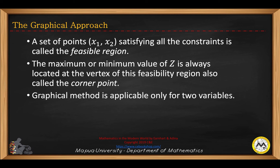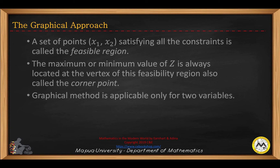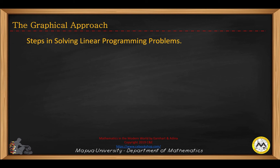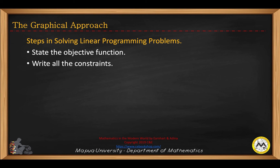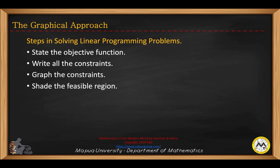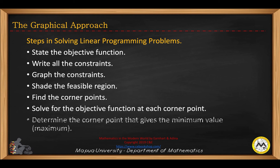Take note that the graphical method is only applicable for two variables. For three or more variables, you can use the simplex method or software such as Excel Solver. The steps in solving a linear programming problem are: state the objective function, write all the constraints, graph the constraints, shade the feasible region, find the corner points, solve the objective function at each corner point, and determine the corner point that gives the minimum or maximum value.